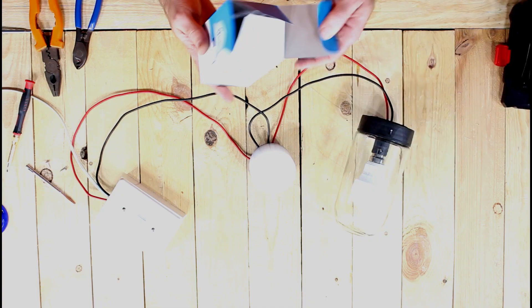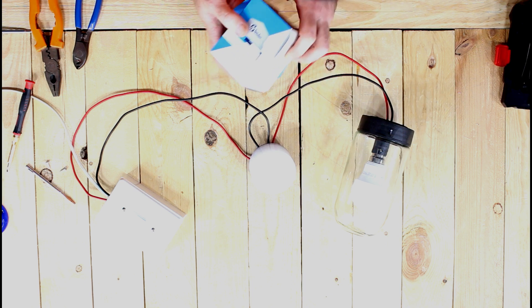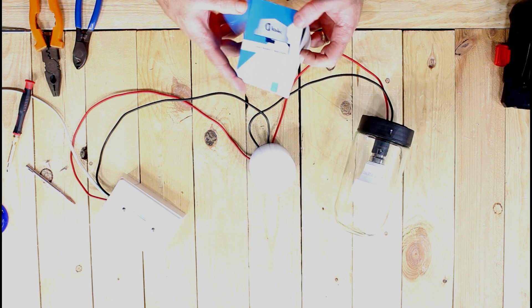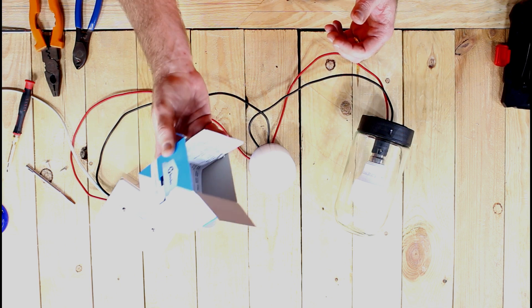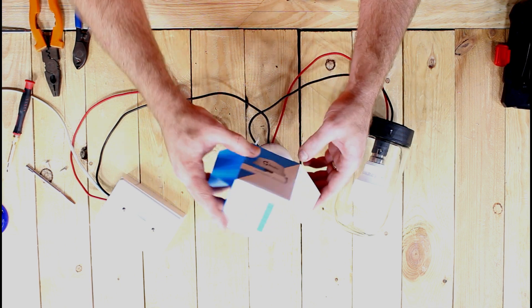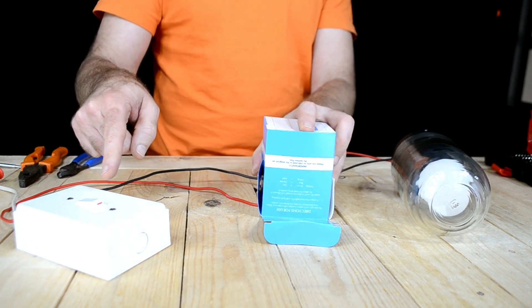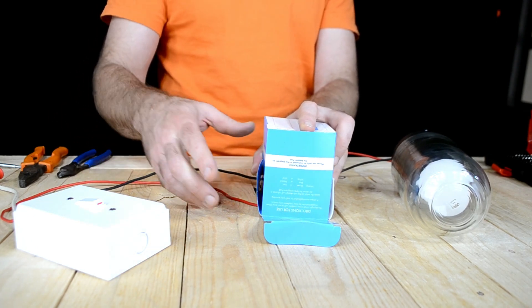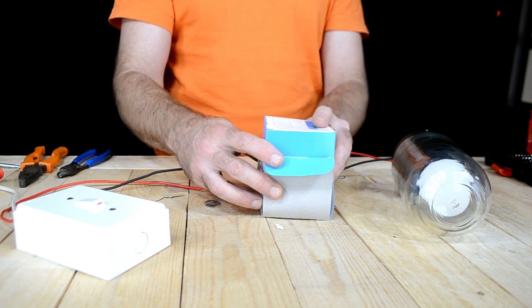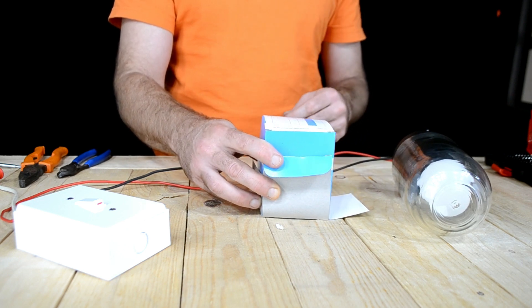In order to correct that, we're going to simulate darkness. We're going to use the box that it was supplied in. And we're going to put that over the day-night switch, with the switch in the on position. It will take approximately 30 to 45 seconds for the relay to switch.